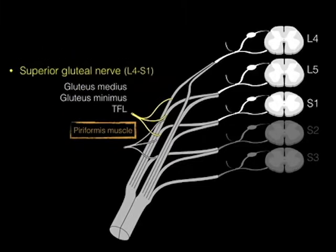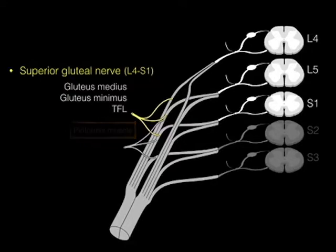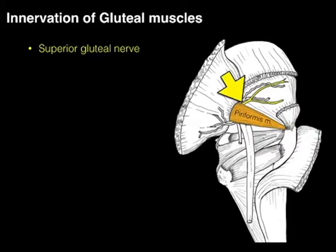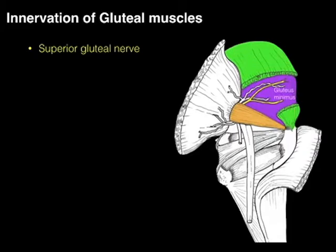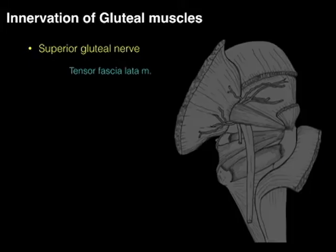In summary, the superior gluteal nerve comes from the L4 to S1 levels of the spinal cord, innervates the gluteus medius, minimus, and TFL, and courses above the piriformis. It then sends nerve fibers to innervate the gluteus medius, gluteus minimus, and the TFL.